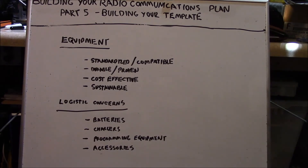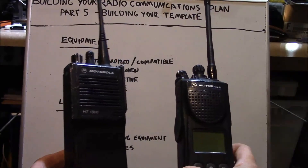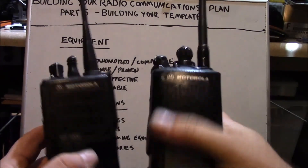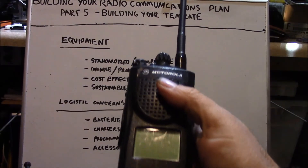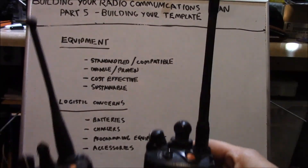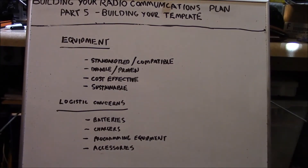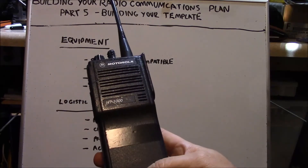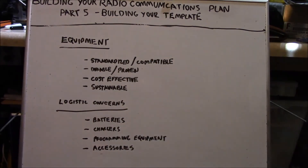Equipment selection — your equipment should be standardized or compatible. Even though these two radios are different, they're still somewhat compatible; the control sets are very similar, though one is limited by not having a display. Writing a template that works across both platforms is feasible. Equipment should be a durable or proven design. Cost-effective — one of these radios you can get for about $25, one is generally about $500. Sustainability is also a factor — you could build up a cache of parts or cannibalize other radios.